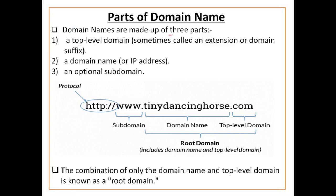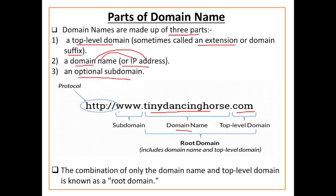Domain name को आप 3 parts में divide कर सकते हो। First है top level domain — sometimes called an extension or domain suffix. जो .com आप देख रहे हो, इसको top level domain, extension, या domain suffix कहते हो। Second है domain name — यह particular site का name है। Third है sub domain — जो optional है, जैसे www।